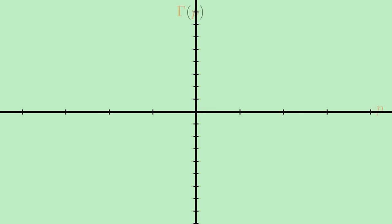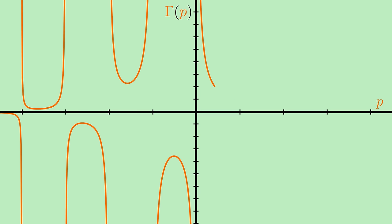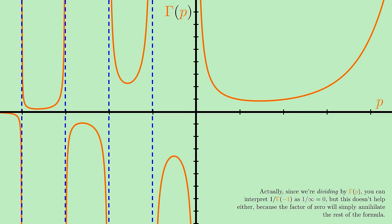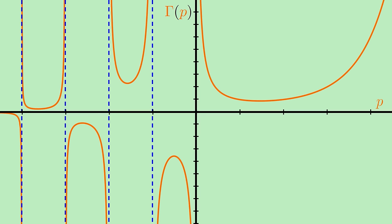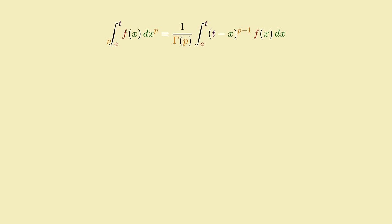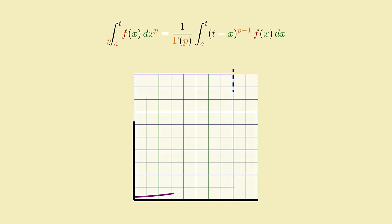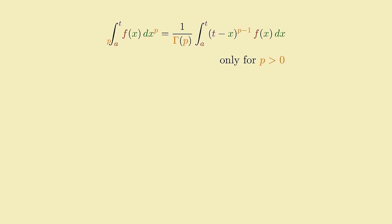For one thing, although the gamma function extends the factorial to the real numbers, it doesn't actually extend it to all the real numbers. Gamma is actually undefined for non-positive integer inputs, so we wouldn't be able to plug in p equals negative one into gamma to compute a derivative using the fractional integral formula we have. But even for fractional negative orders like p equals negative one-half, for which gamma is defined, it turns out the integral expression becomes divergent, since an integral of the form x to the p minus one is divergent near x equals zero for non-positive values of p. So our fractional integral formula really only works for strictly positive values of p.